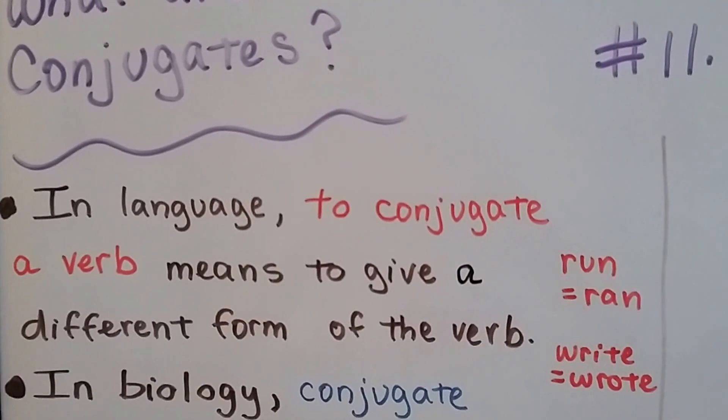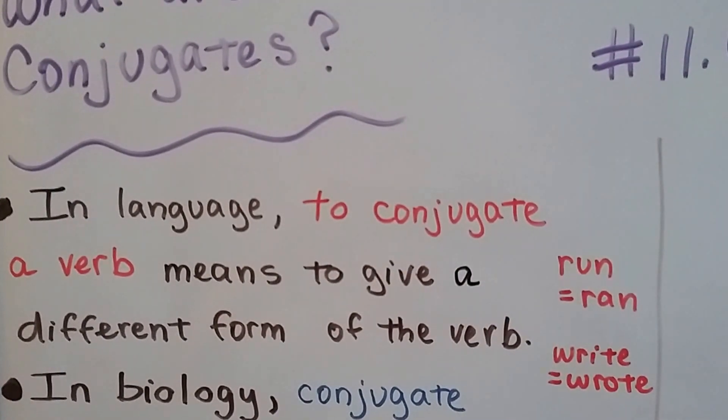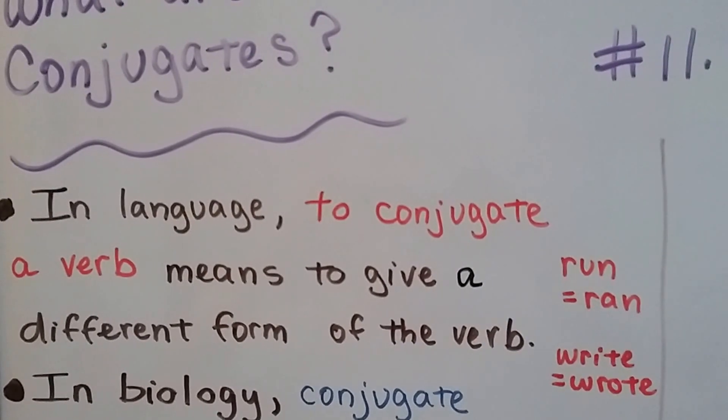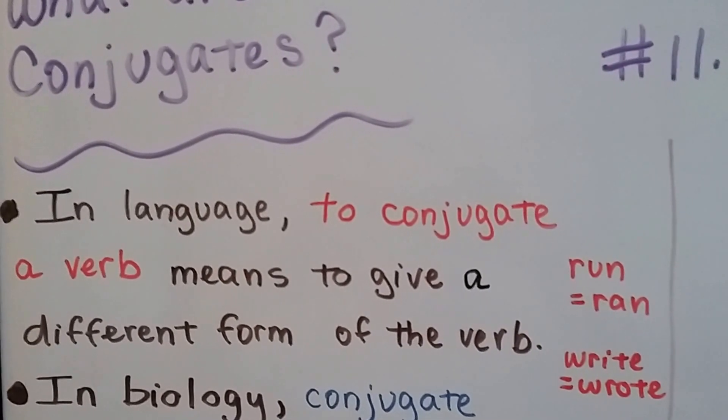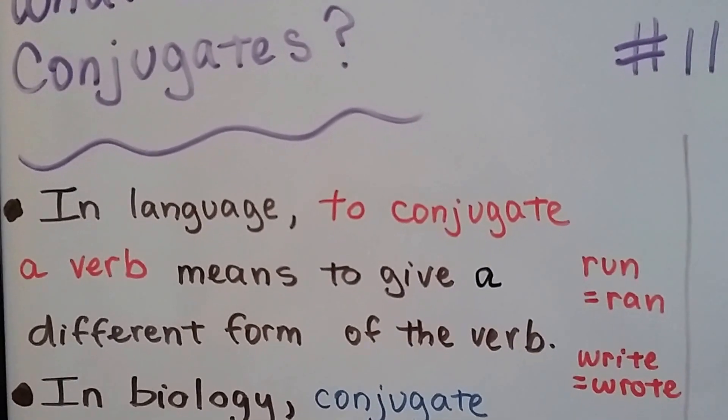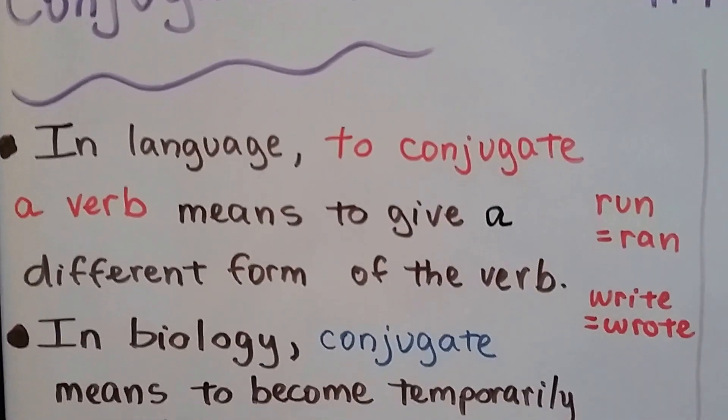Well, in language, to conjugate a verb means to give a different form of the verb. So if we have run, it would be ran, and if we have write, it would be wrote. That's conjugating verbs.